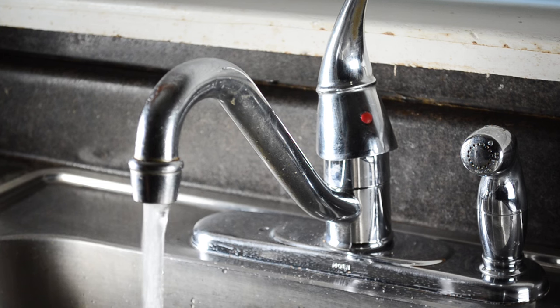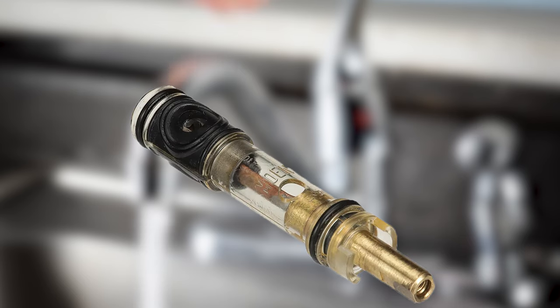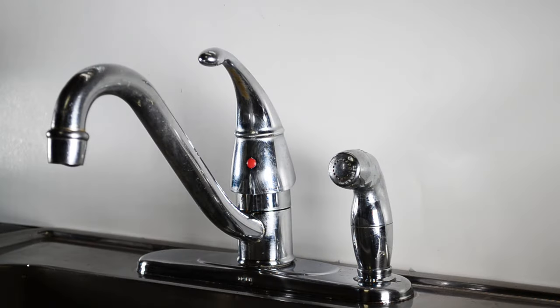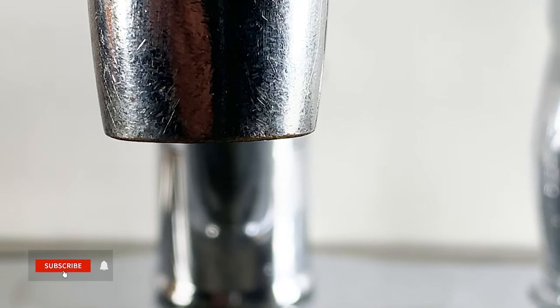Welcome back to the channel. Today we are replacing a Moen 1225 cartridge on a single handle kitchen faucet because it's been dripping water continuously.